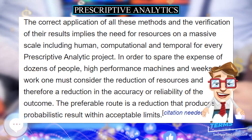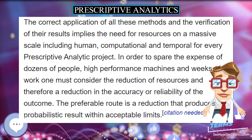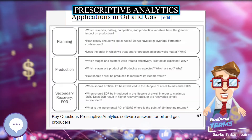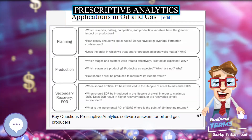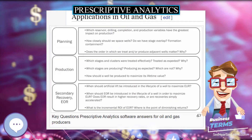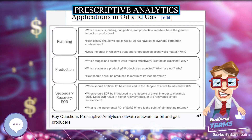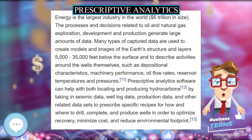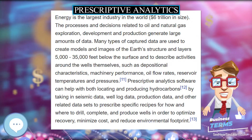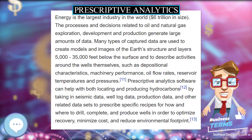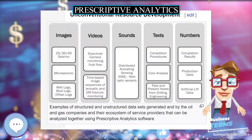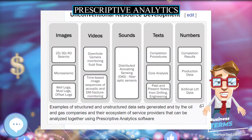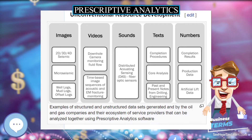The next phase is predictive analytics. Predictive analytics answers the question: what is likely to happen? This is when historical data is combined with rules, algorithms, and occasionally external data to determine the probable future outcome of an event or the likelihood of a situation occurring.